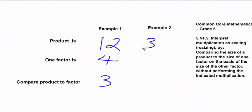If we take another example, let's say 30, and let's say one of the factors is 5. Then we know that that's a 6. So then the comparison is that 30 is 6 times bigger than 5.